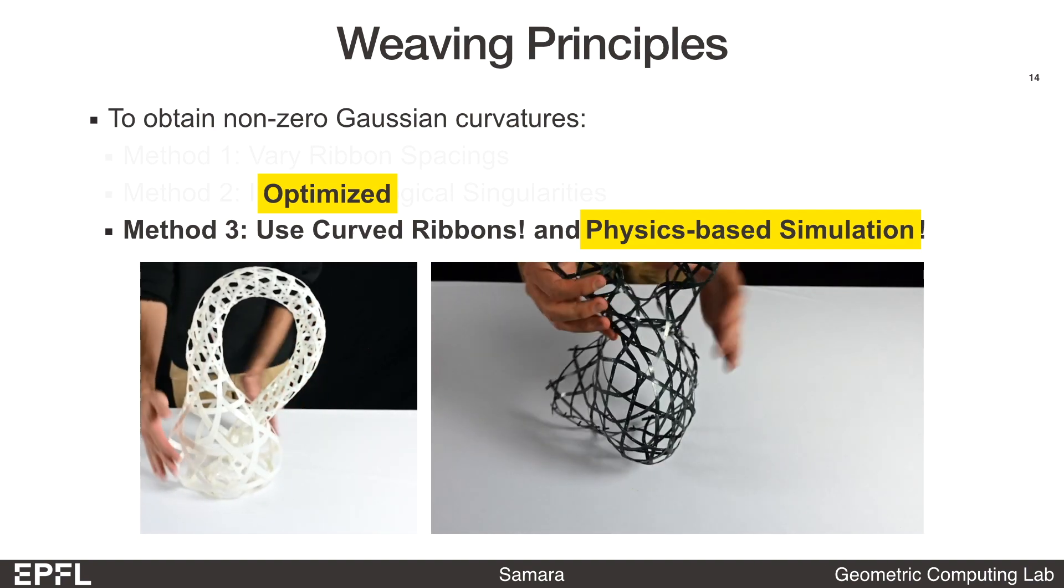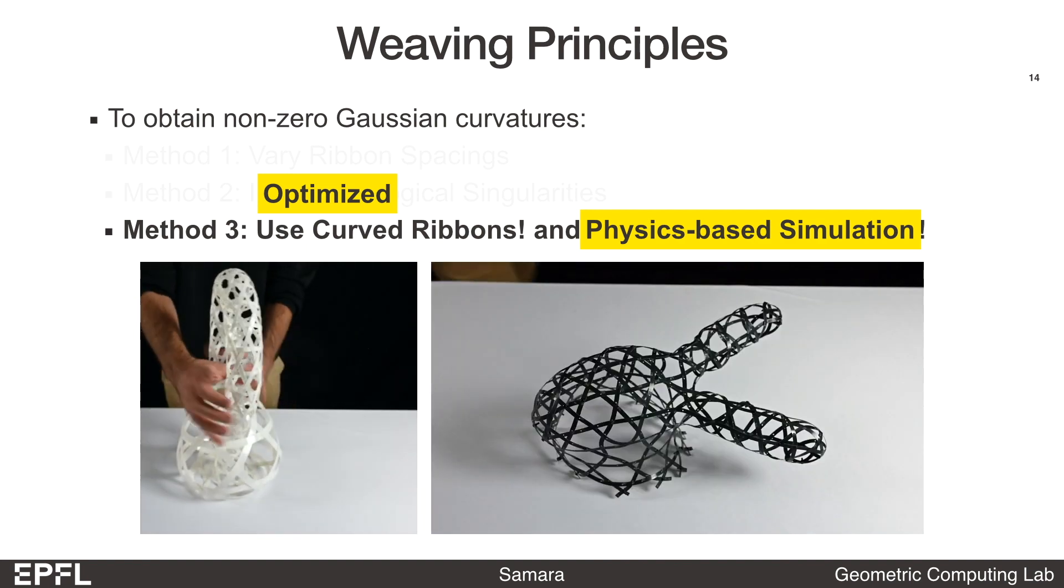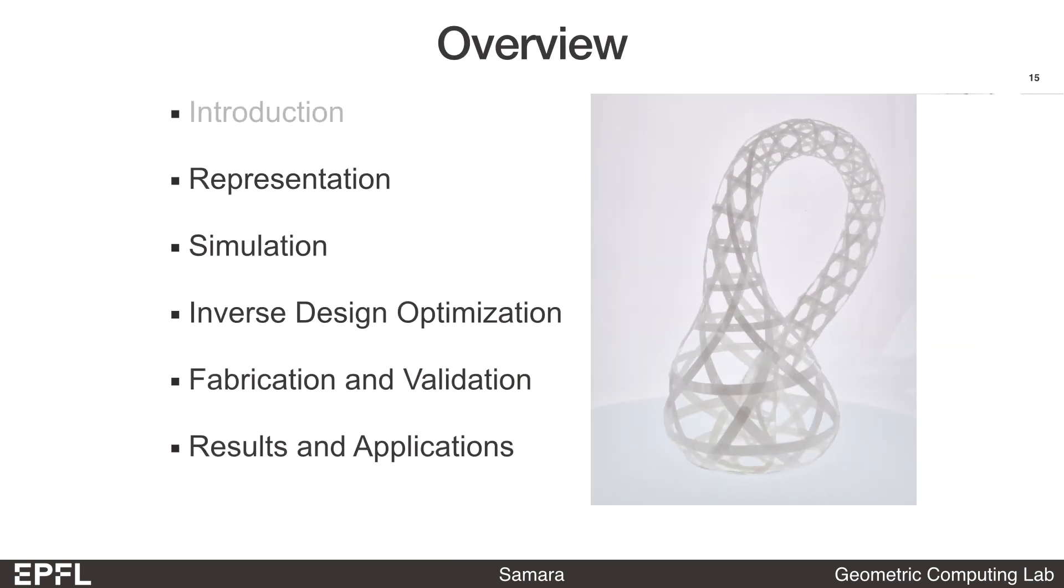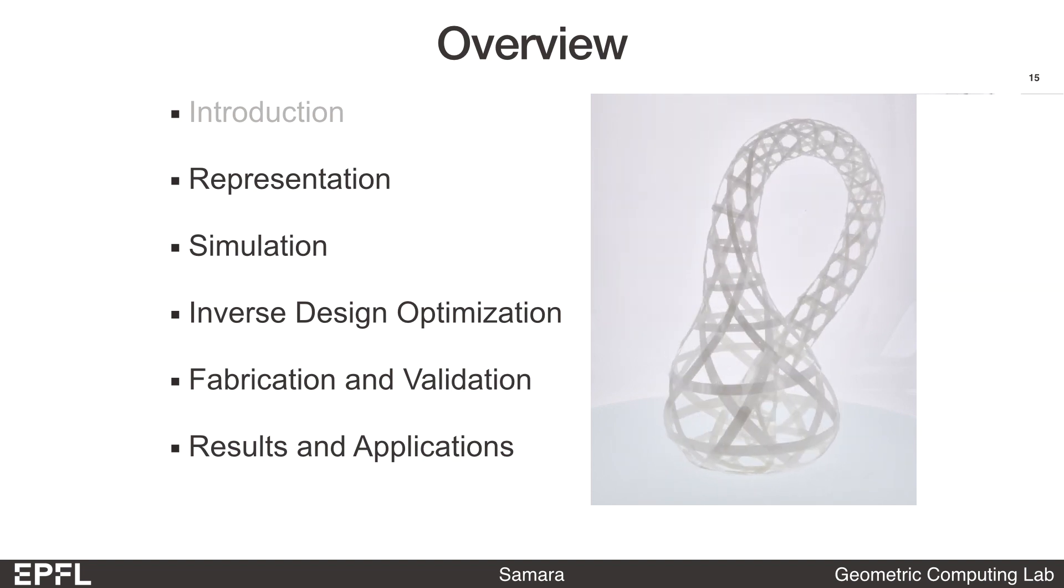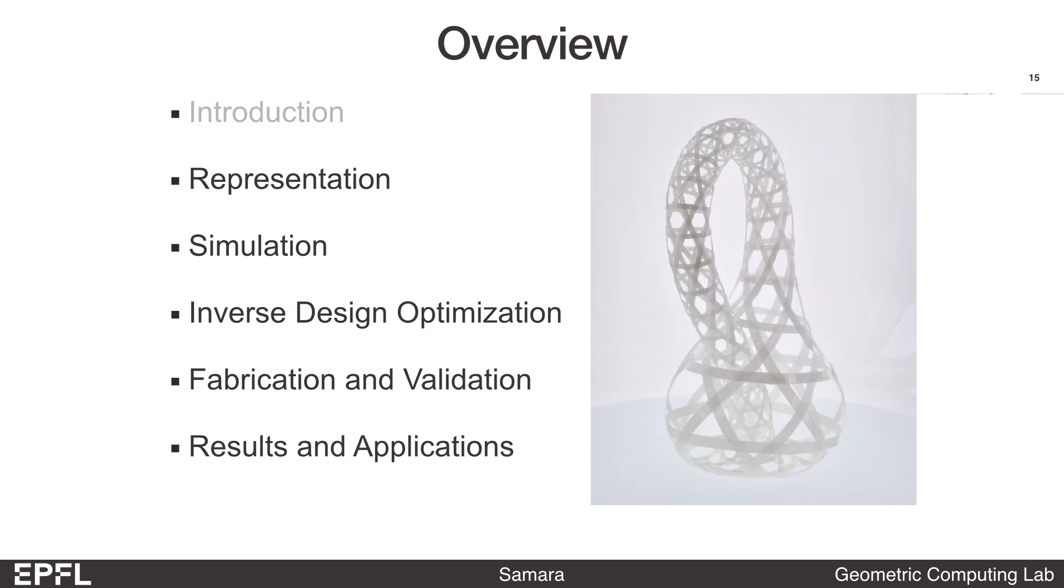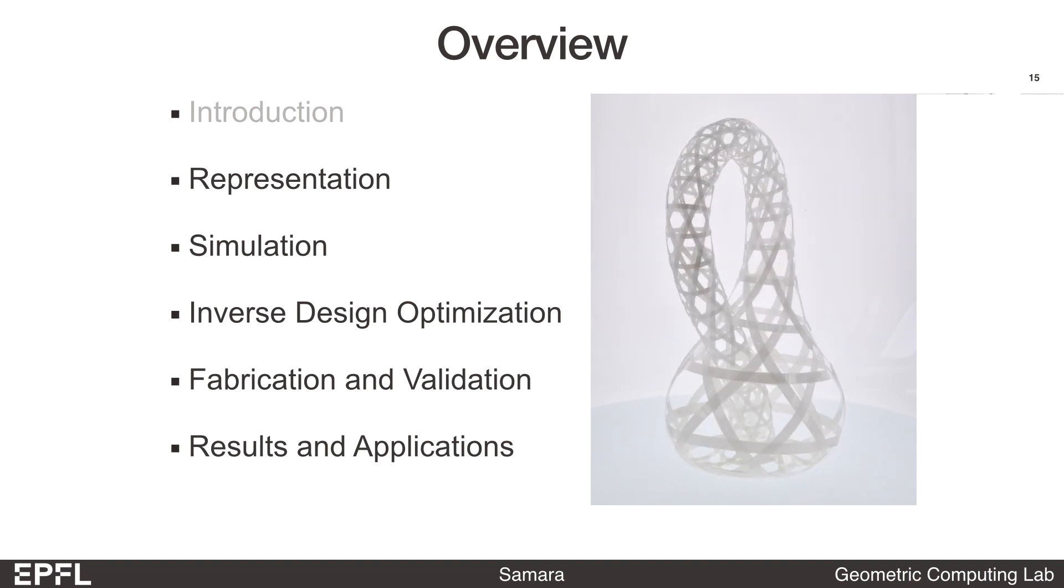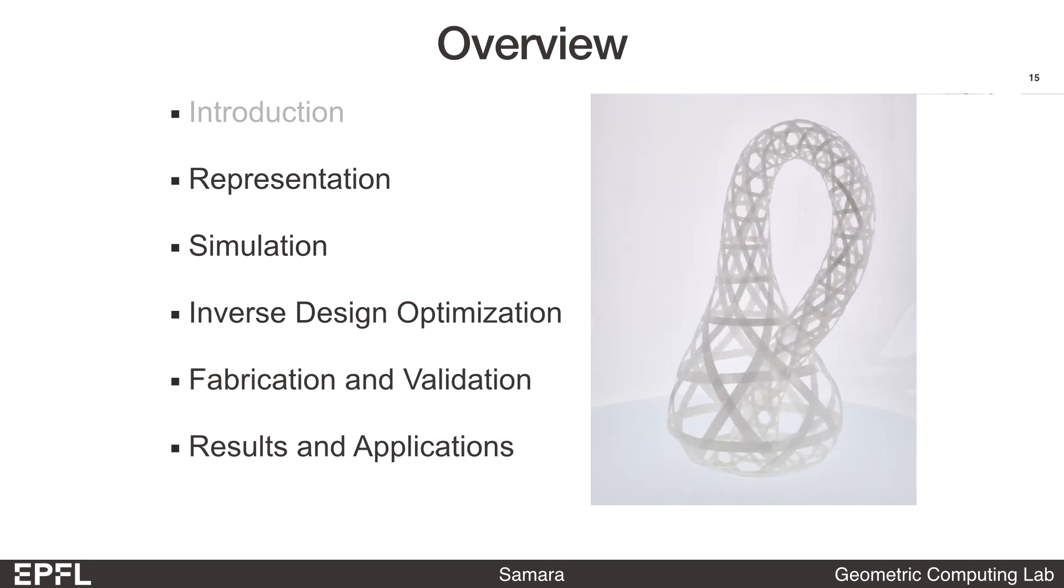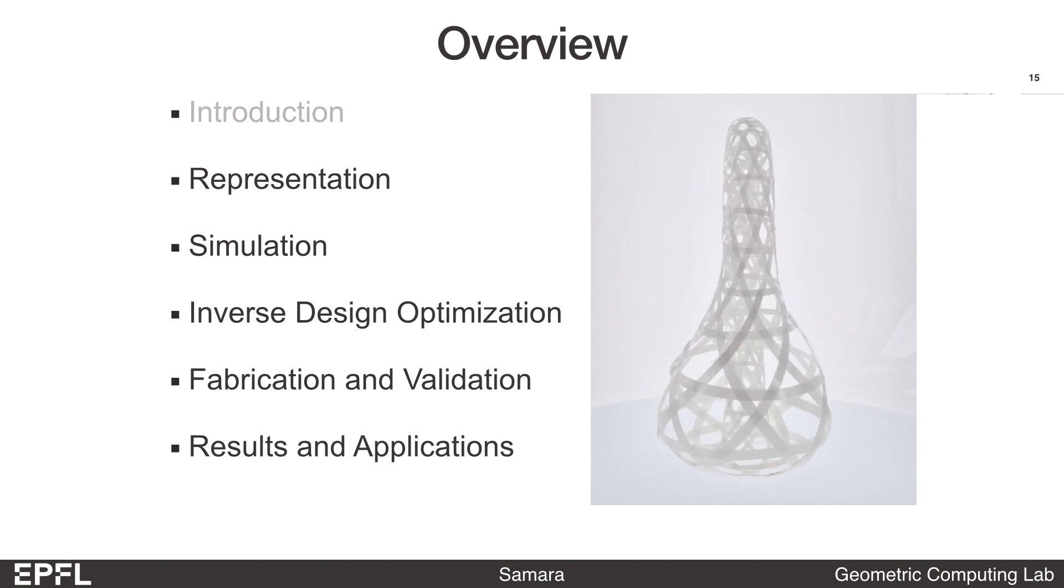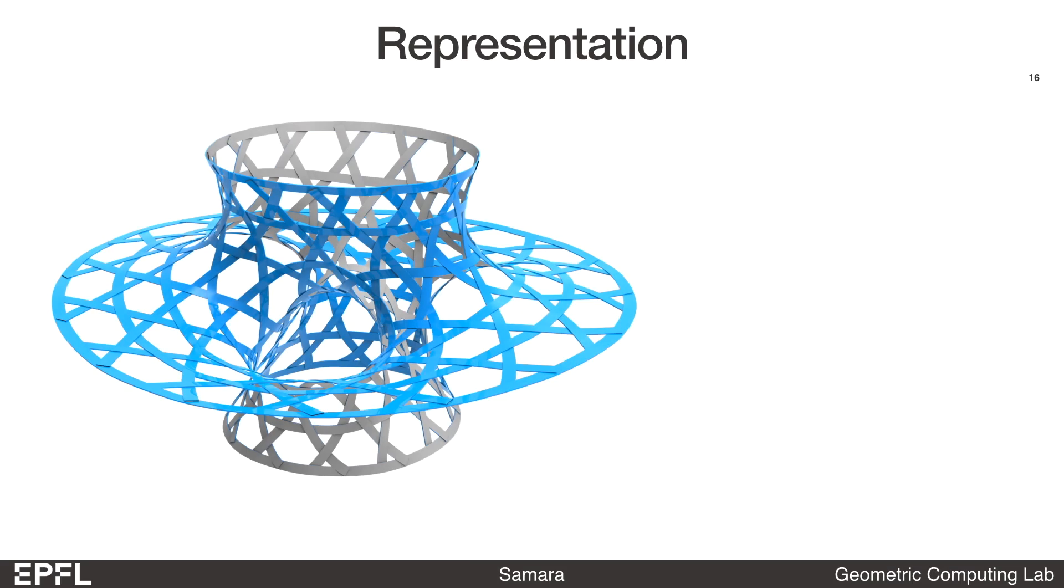Our inverse design optimization is based on the adjoint method, and we extended the framework to handle curved ribbon weaving. To explain our design framework, I will first describe the representation we use for woven structures. Then I will present our simulation and inverse design optimization algorithms. We built a collection of physical models to validate our method, and I'll explain this process in more detail. Finally, I'll discuss several interesting results and applications.